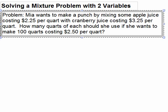We're going to solve a mixture problem using two variables. Mia wants to make a punch by mixing some apple juice costing $2.25 per quart with some cranberry juice costing $3.25 per quart. How many quarts of each should she use if she wants to make 100 quarts costing $2.50 per quart?